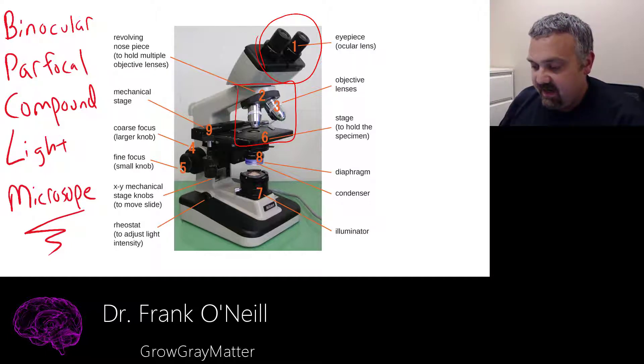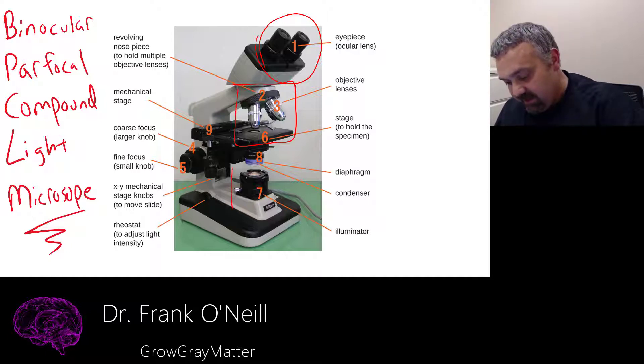And we also have an ocular lens as well, which oftentimes is a 10x magnification, but it can be 20, it can be 25. So binocular parfocal compound light microscope because of the illuminator here.